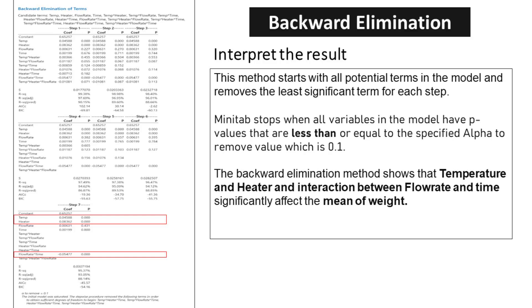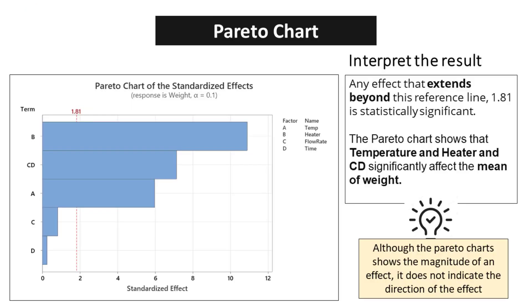Typically, this threshold is set at 0.1. In the study, any effect that extends beyond the reference line of 1.81 is deemed to be statistically significant. A Pareto chart has been utilized to visually represent the significance of various factors. The chart clearly indicates that temperature, heater, and CD have a significant effect on the mean weight.